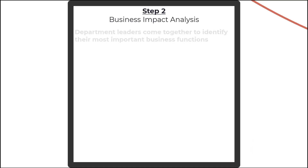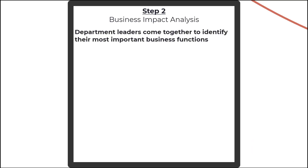In the Business Impact Analysis, directors, vice presidents, team leads, or any other head of department will provide input on what they consider the most important business function to them, and what the impact would be if they were to lose that function — and that would be the impact on the business as a whole, not just their department.